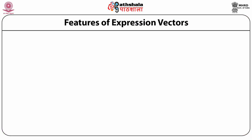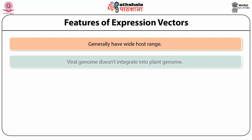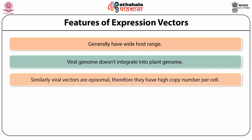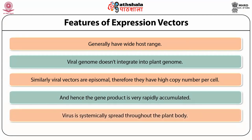Features of expression vectors: generally, these expression vectors have a wide host range. The viral genome does not integrate into the plant genome. Similarly, viral vectors are episomal; therefore, they have a high copy number per cell. Hence, the gene product is very rapidly accumulated and the virus is symmetrically spread throughout the plant body.